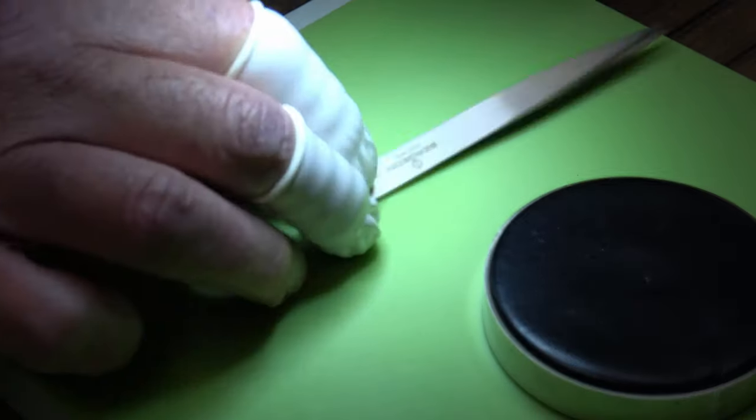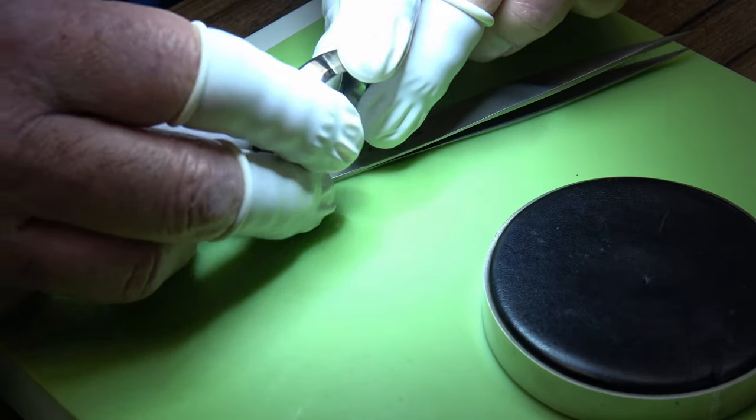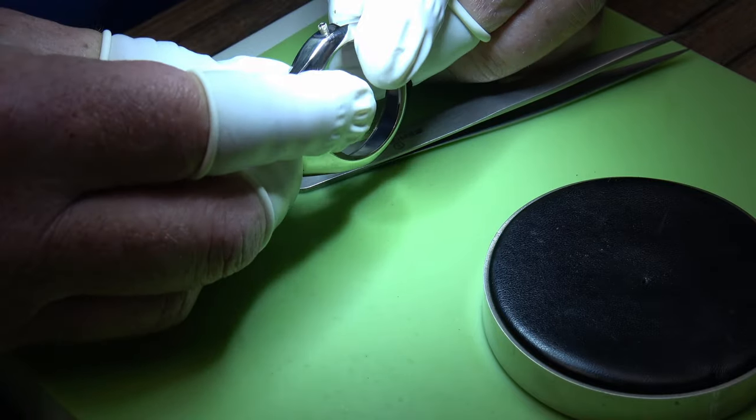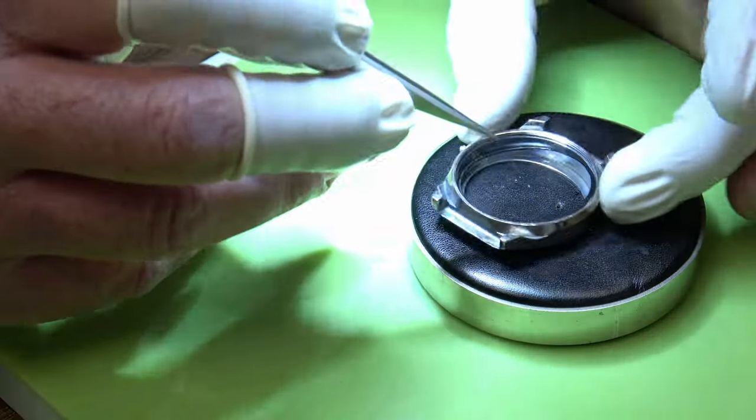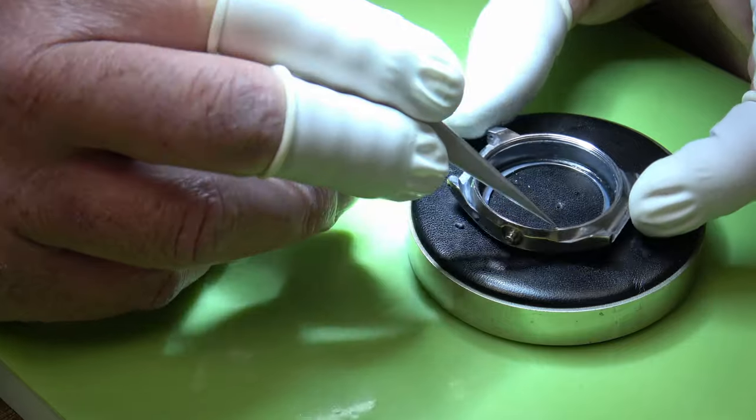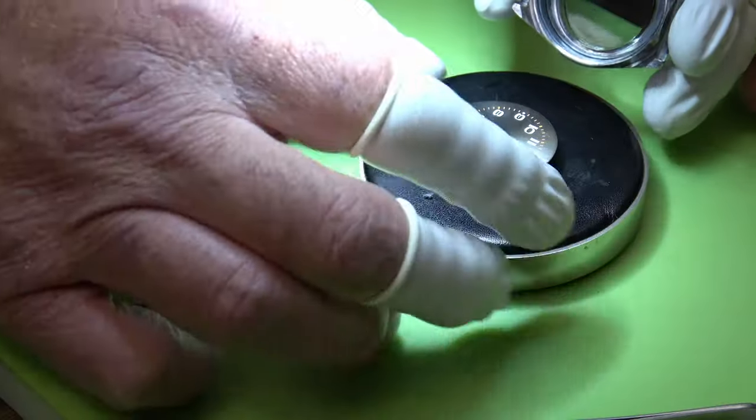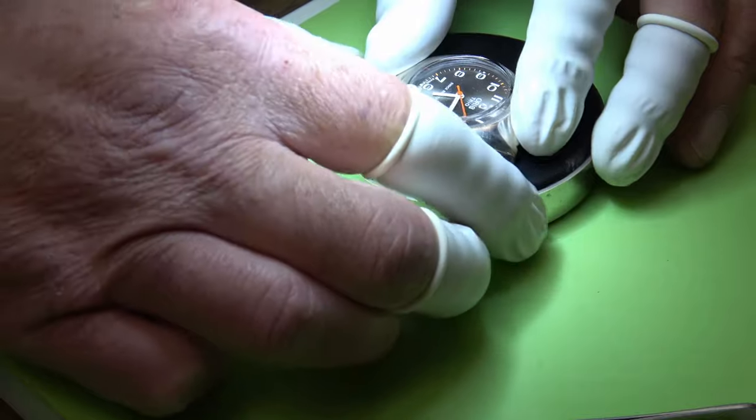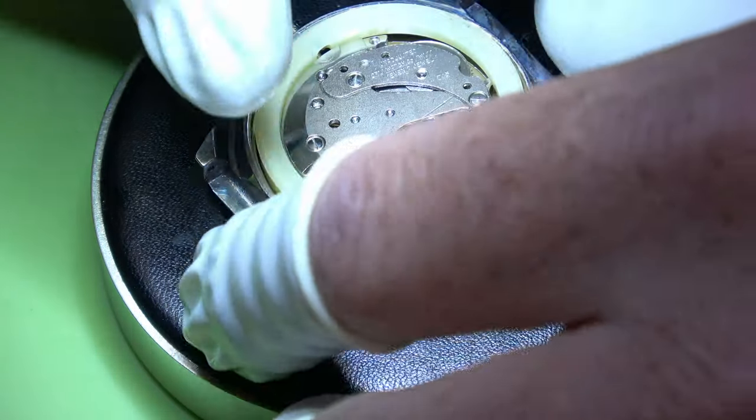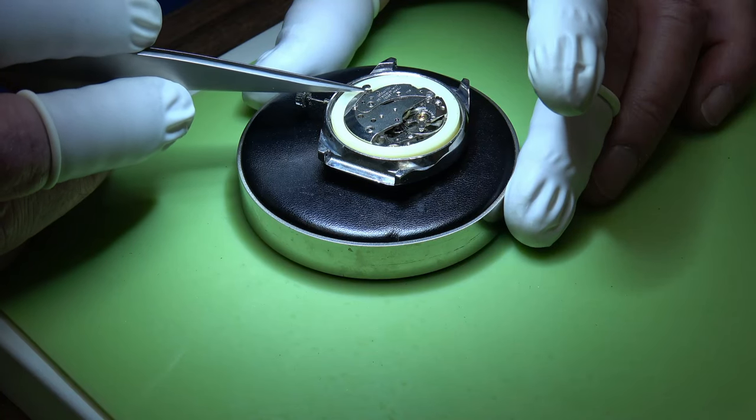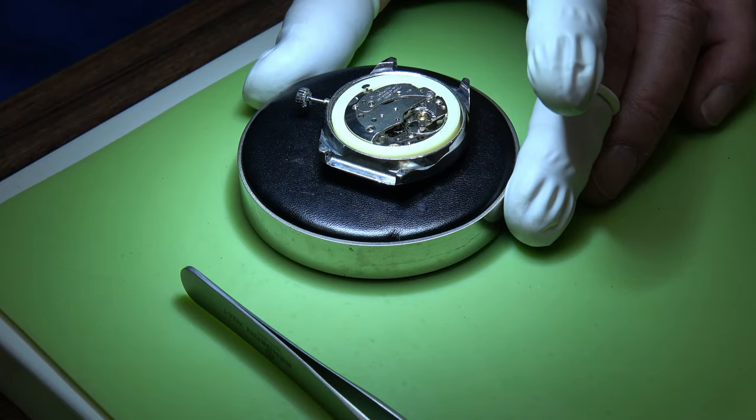But I will put this gasket in, and then we can put the crystal in. So I did manage to get hold of a new one. That goes into the case, and we can put that retaining ring back in. Add the screws in and screw it down.